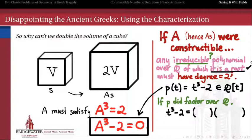Is there a way that we can factor t cubed minus 2 over the rational field? If it were possible to factor it non-trivially over the rational field, then because p is a cubic, one of those factors is going to have to be degree 1, and the other is going to have to be degree 2. The only other possibility is that one of the other factors has degree 0, and therefore it's not a non-trivial factorization.